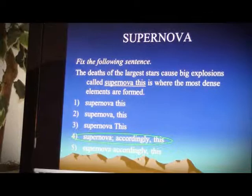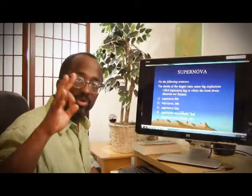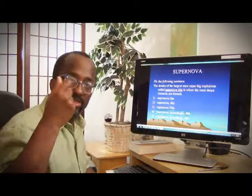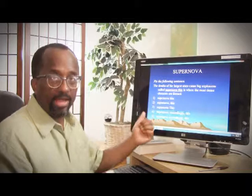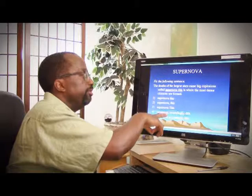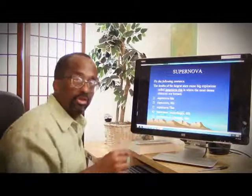That's it for today. Those are four ways of fixing run-on sentences. One: make it into two sentences. Two: use a semicolon. Three: use a regular conjunction. And four: use a conjunctive adverb like 'accordingly' or 'similarly' — but you must use a semicolon first, then the adverb, then follow it with a comma. That's the correct format. Thank you very much. See you next time.